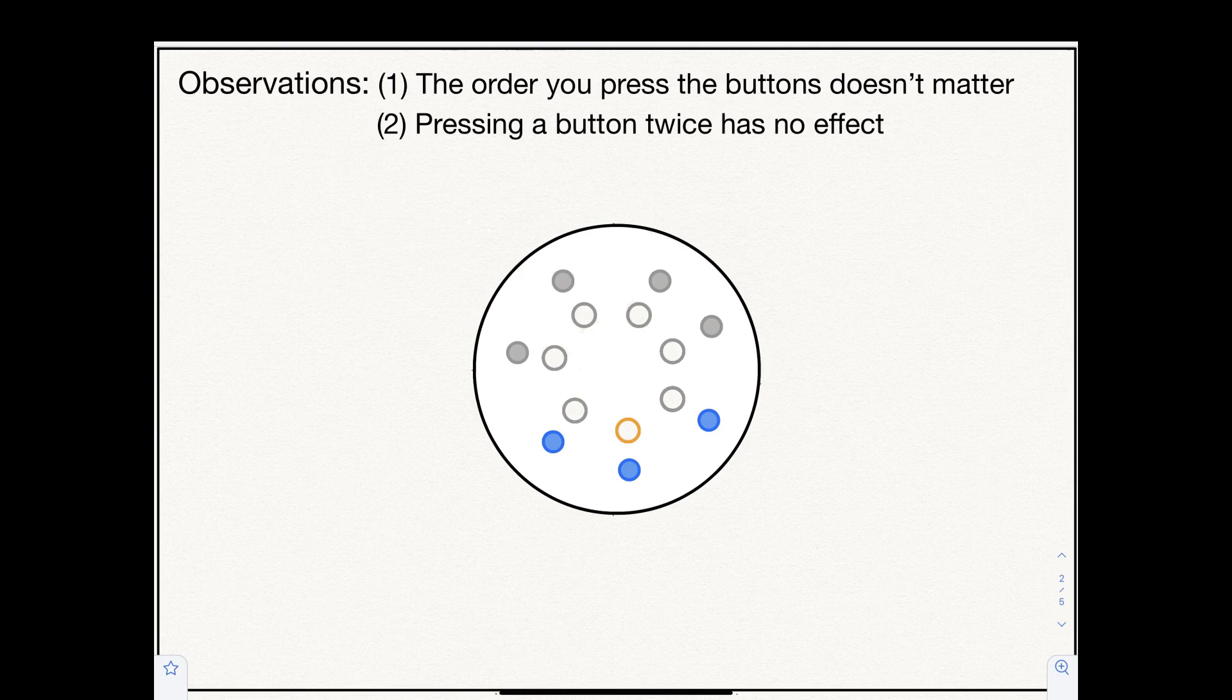Because anytime you press a button twice, you can reorder so that you press them consecutively, which clearly has no effect.